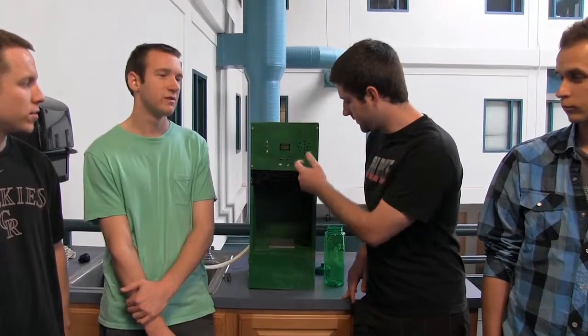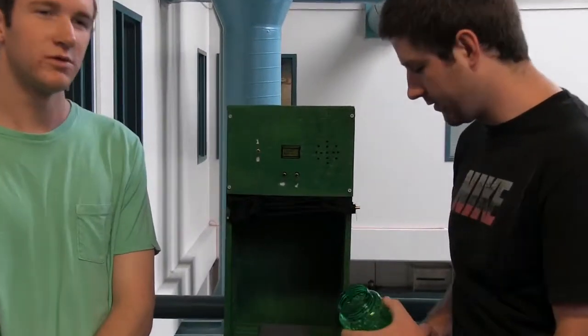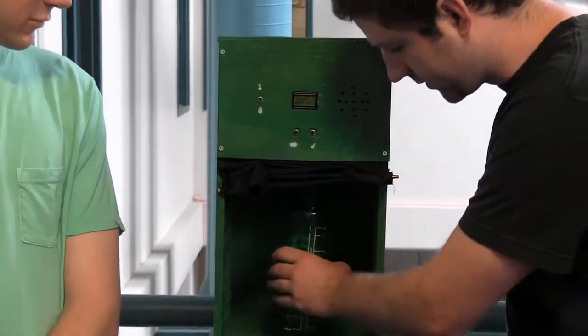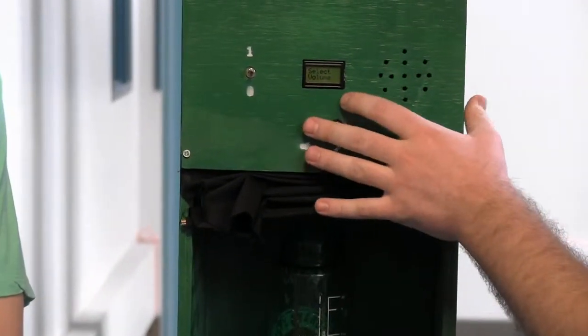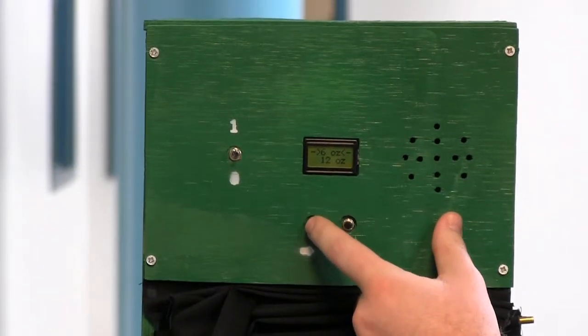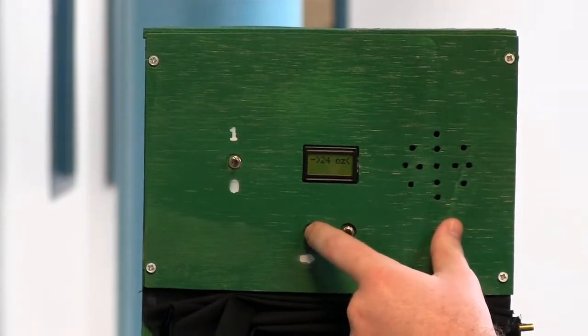So the screen here says insert bottle and it's waiting for you to insert your bottle on the pressure sensor and it senses your bottle. It tells you to select your volume and this is our scroll button. It goes 6, 12, 18, 24 ounces.